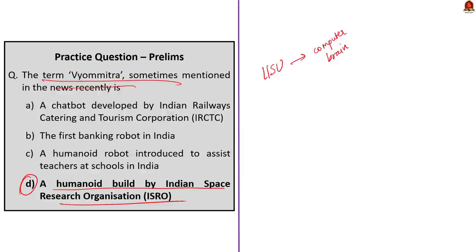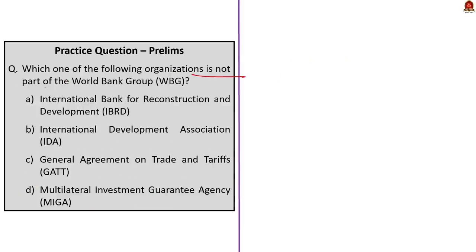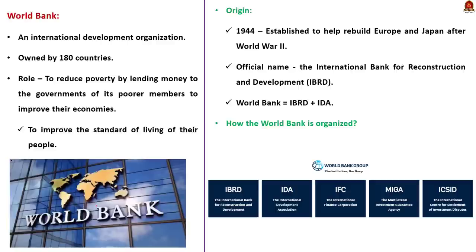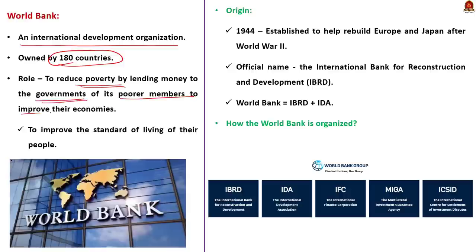The next question reads: which of the following organizations is not part of the World Bank group? Option A, IBRD; Option B, IDA; Option C, GATT; Option D, MIGA. To answer this question, you should know about the World Bank and the World Bank Group. The World Bank is an international development organization owned by 189 member countries. Its role is to reduce poverty by lending money to governments of its poorer members to improve their economy and the standard of living of their people. The bank is also one of the world's largest research centers in development.